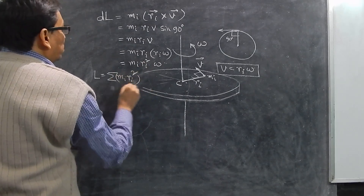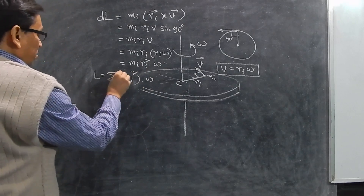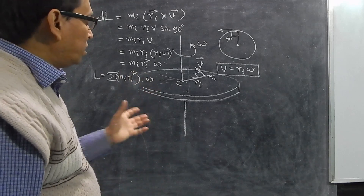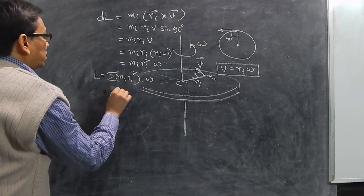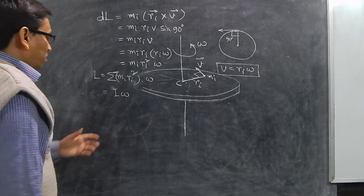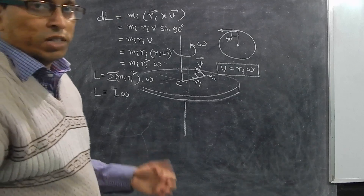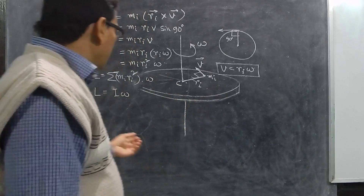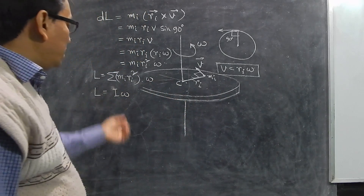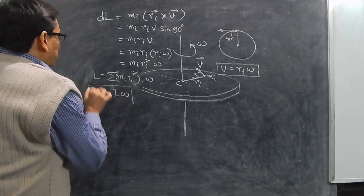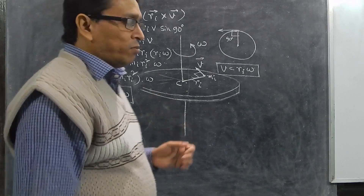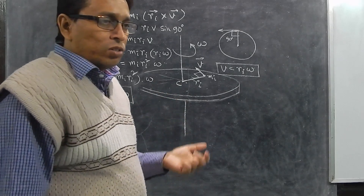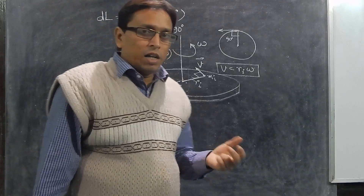The sum Σmi × ri² is defined as the moment of inertia, denoted by capital I. So we can write the total angular momentum as L = Iω. This is the general formula for angular momentum of a rigid body rotating about an axis. For better understanding, I recommend you see my previous classes where I have derived the expressions of moment of inertia for different body types.